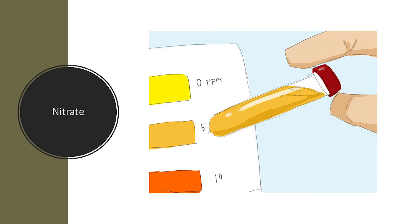Drinking water containing high nitrate levels can affect the ability of our blood to carry oxygen. This is especially true for infants who drink formula made with water containing high levels of nitrate. You should always have a professional lab test your drinking water for the presence of nitrates.